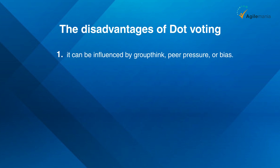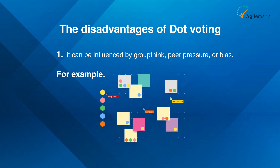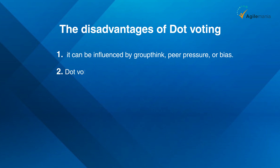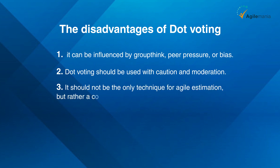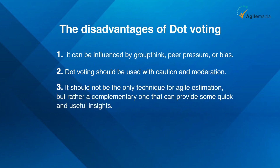The disadvantages of dot voting are that it can be influenced by groupthink, peer pressure, or bias. For example, some team members might vote for the same story as others because they don't want to stand out or disagree, or some team members might vote for a story because they like it or are familiar with it — not because it is actually bigger or more important. Therefore, dot voting should be used with caution and moderation, and should not be the only technique for agile estimation, but rather a complementary one that can provide some quick and useful insights.